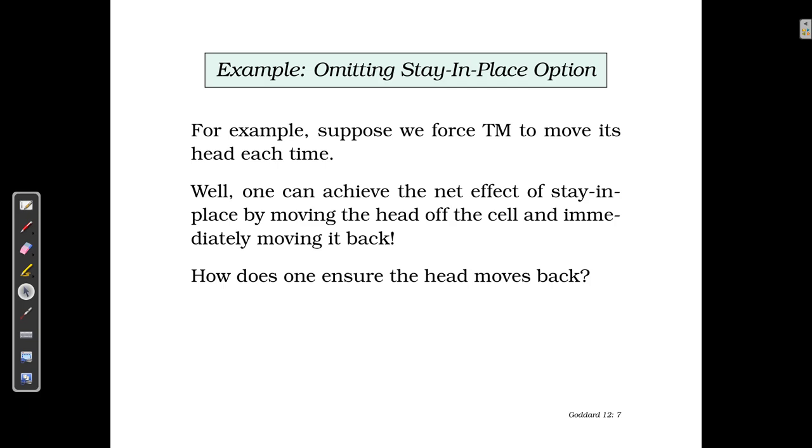If we were to achieve this effect of stay in place, what we can do is we can move the head off the cell and then immediately back again. It's very simple. If we move it to right, we can move it back to left next move, so that ensures that it is the same as the stay. That proves that it has the same capability as the other Turing machine.